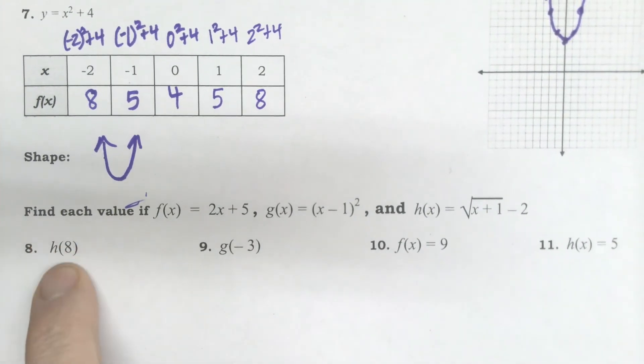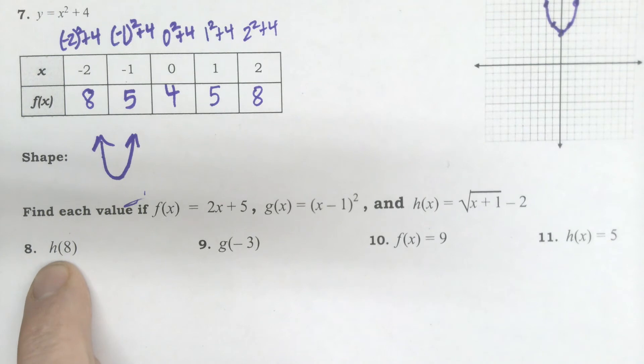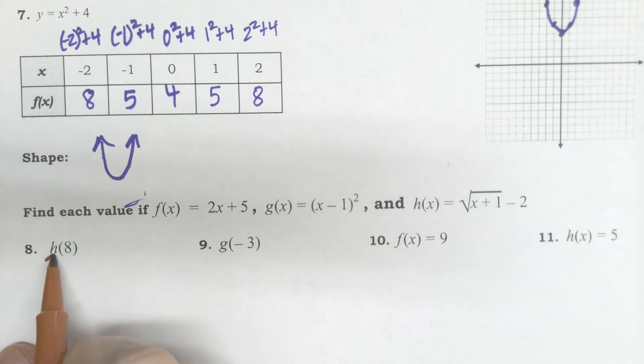And it's been a while since we've done function notation. It feels like it's been a long while. So let's take a look at this last section. Keep in mind what this means, H of 8. It doesn't mean multiply like sometimes we think it's going to mean.